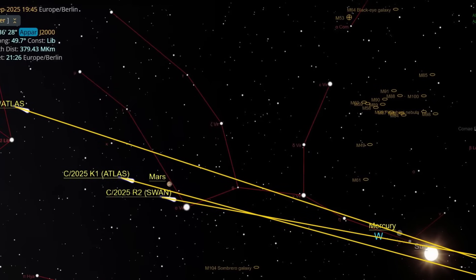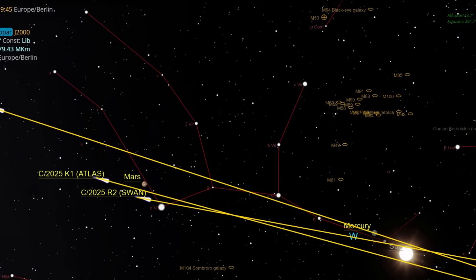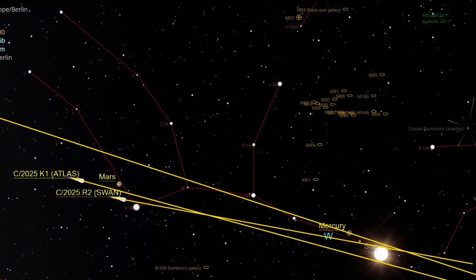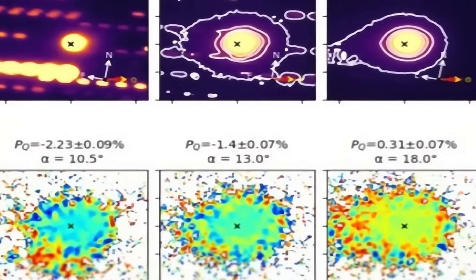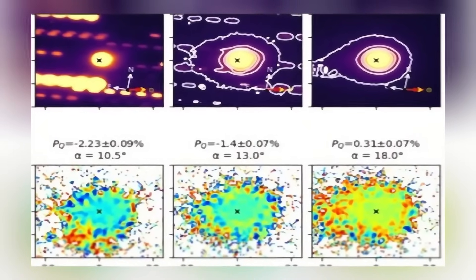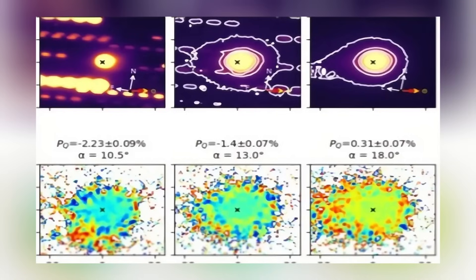Predictions about its behavior have been thrown into question. Its light curve, the expected progression of its brightness as it neared the sun, was projected to rise gradually, peaking near perihelion before fading once more. But in September, the object broke away from those expectations. Its apparent magnitude leapt sharply, brightening far more than models suggested.